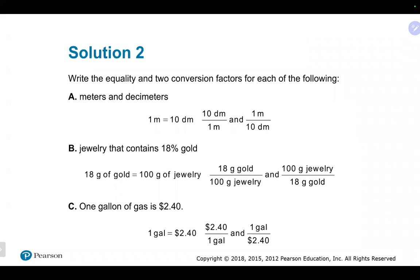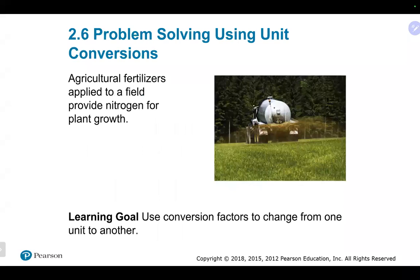Here are a couple of equalities: one meter equals 10 decimeters, 18 grams of gold in 100 grams of jewelry, and one gallon of gas equals $2.40. So one gallon equals 240 cents — that was probably expensive when they wrote the book. From any of these equalities you can get two conversion factors.